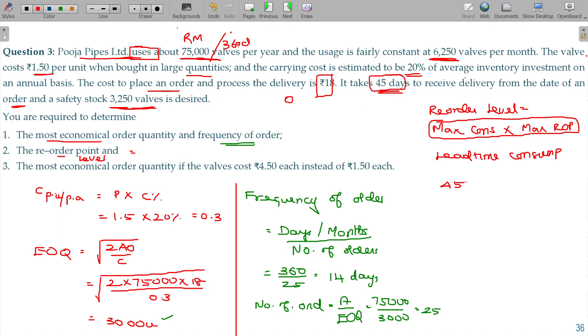So 360 days is 75,000, per day is 75,000 divided by 360 - that's the daily consumption. I have to wait for 45 days once I order, so 45 days is the lead time consumption.